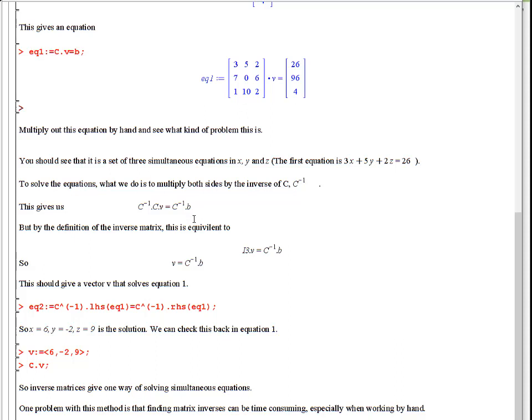Then remember some of the things we found earlier, which is that on the left-hand side, it does not matter which one we calculate first. So instead of calculating c times v first, we can calculate c minus 1 times c first. But the definition of c minus 1 times c is i3, it must be the identity matrix, and on the right we have c minus 1 times b.